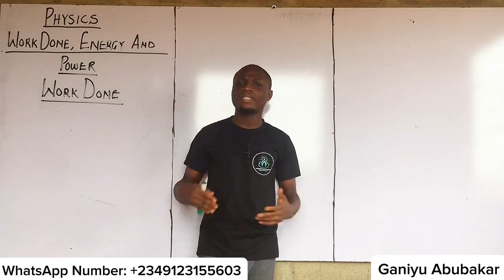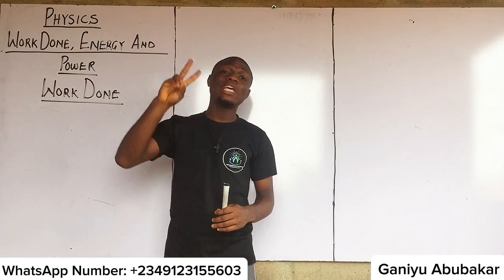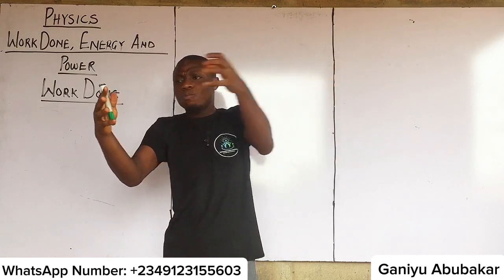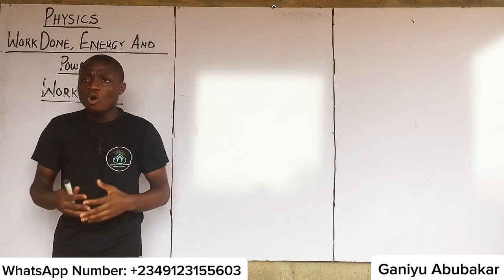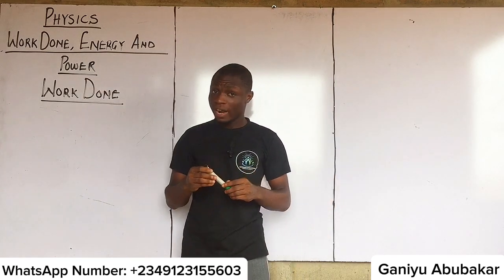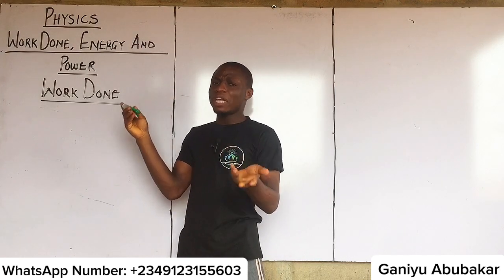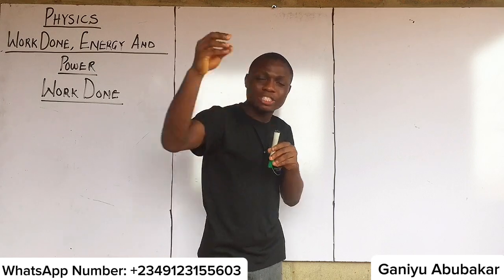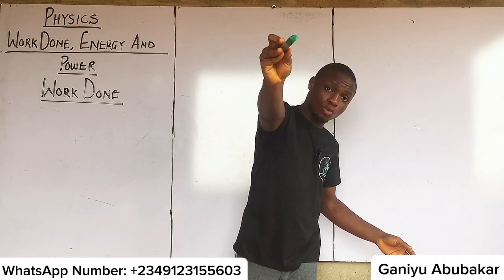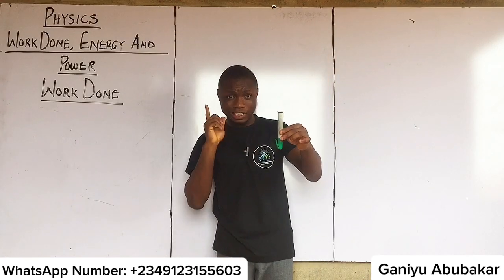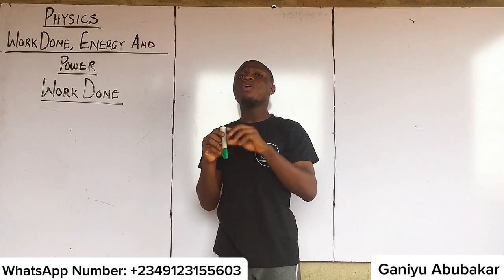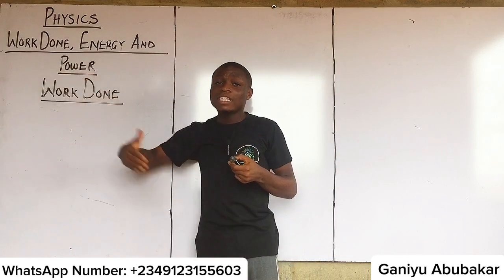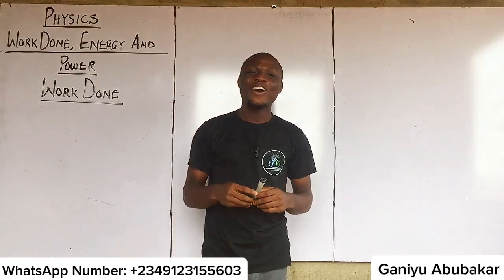In that definition there are two key terms: one is force and the other is distance. For work to be done, a force applied on an object must cause that object to move a distance. For example, I have this marker — I apply a force of 10 newtons and throw it to you. If the marker moves halfway and comes back to me, that is not work done in physics.